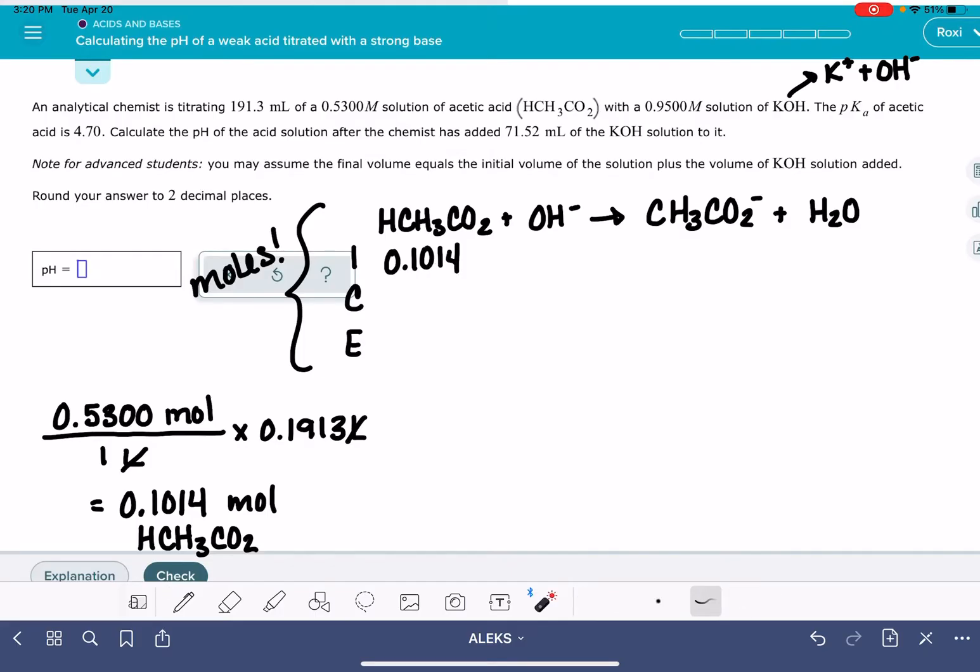And then we're going to do the same thing for the OH-. So we want the molarity of the KOH. It is 0.9500, representing 0.9500 moles per every liter. The actual volume of solution that we have here is 71.52 milliliters, which is 0.07152 liters. 0.95 times 0.07152 gives us 0.06794 moles.